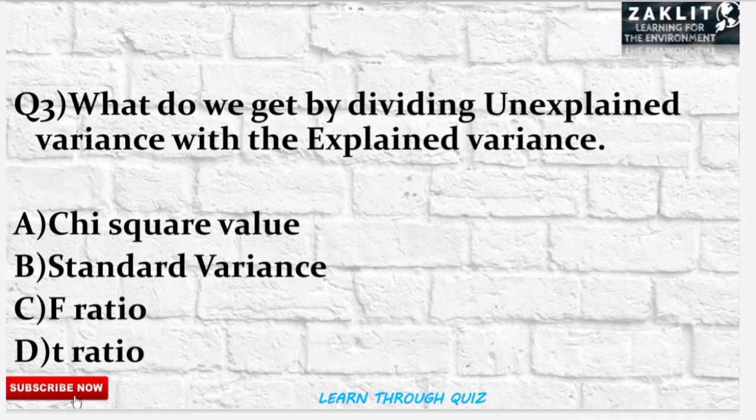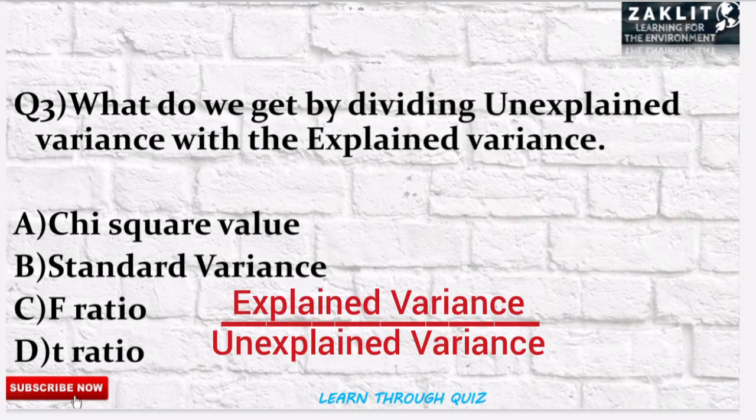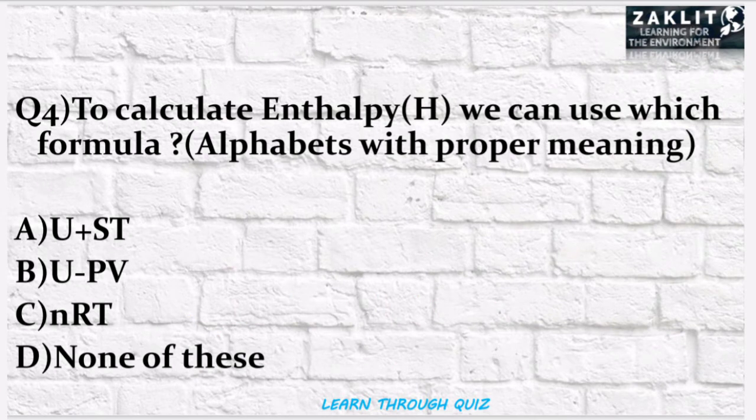The next question was: what do we get by dividing the unexplained variance by the explained variance? The correct answer is option C — we get the F-ratio by dividing the unexplained variance by the explained variance.